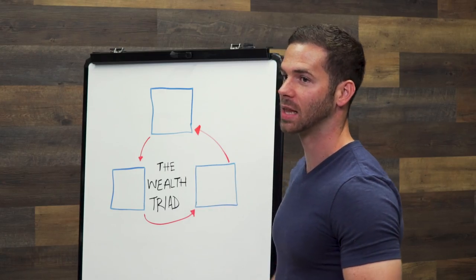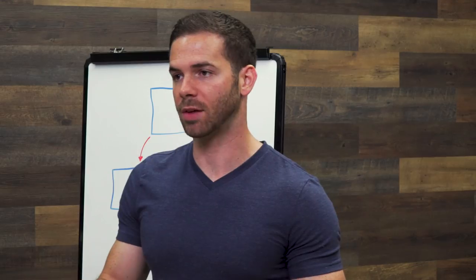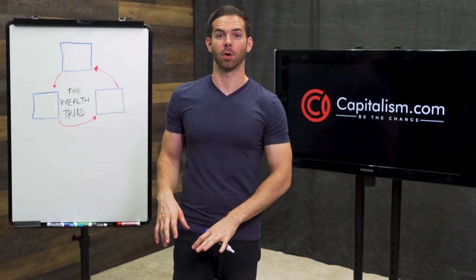So the wealth triad looks like this. I know a lot of entrepreneurs who are good at making money, terrible at keeping and growing money.